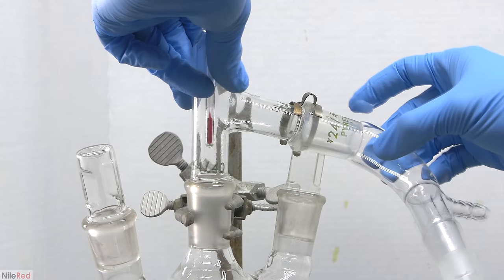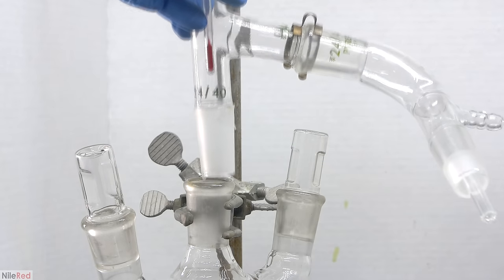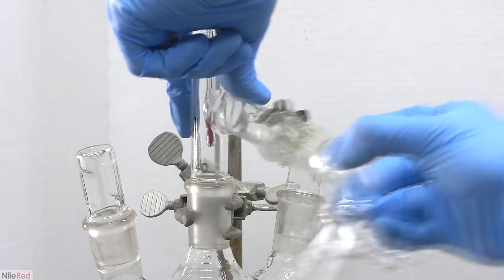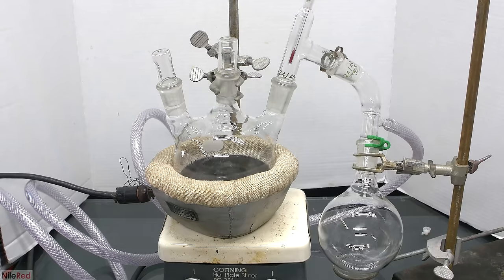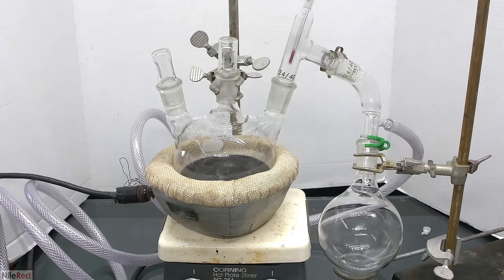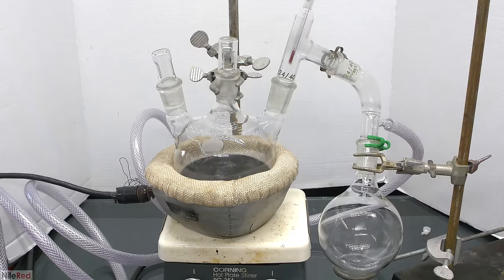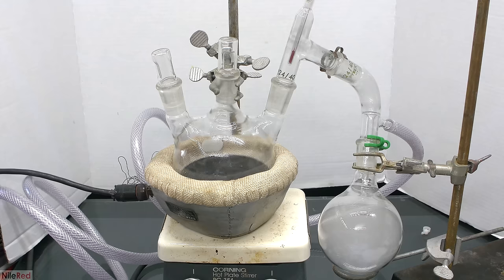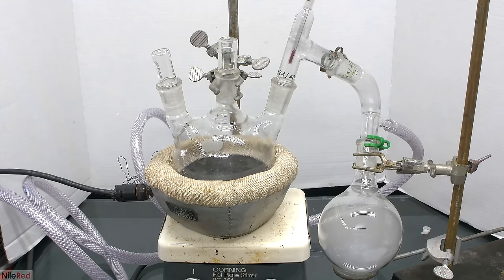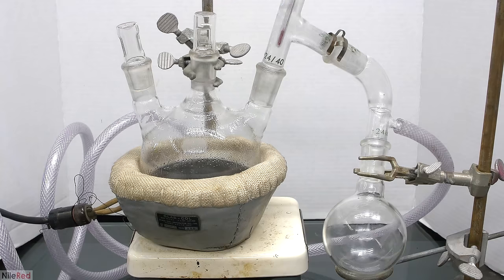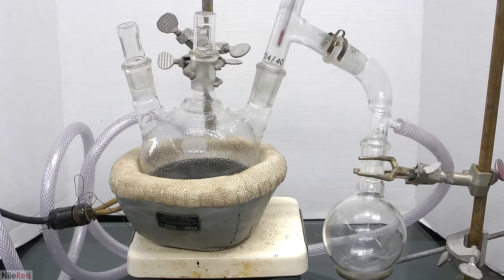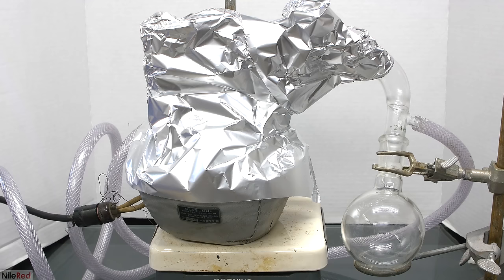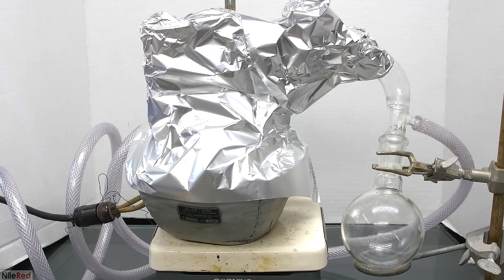The next thing we need to do is vacuum distill the aluminum isopropoxide. Before we do this, every joint has to be greased, and we can't use a condenser because the aluminum isopropoxide would freeze in it. When everything looks good, I start the distillation by turning on the vacuum and heating. The reaction mixture is still hot from before, so it's important that the vacuum is turned on slowly. What initially comes over is leftover isopropanol, which can be discarded. The receiving flask was changed out, and now with all the isopropyl alcohol gone, we can start to collect our aluminum isopropoxide. To keep the apparatus hot and help things come over, I insulated it with aluminum foil.